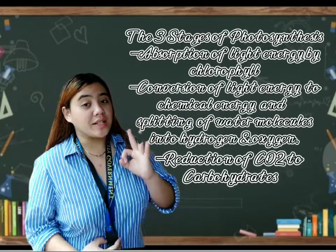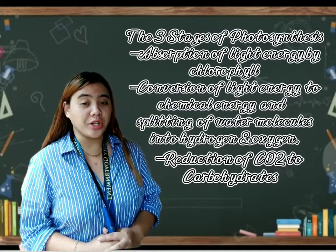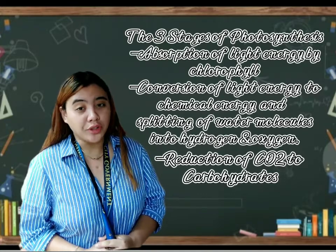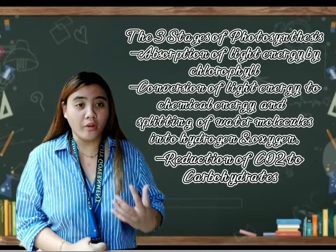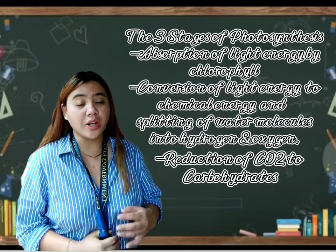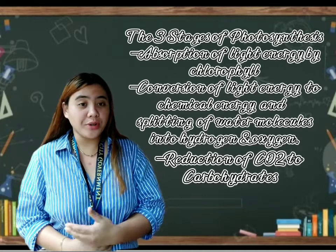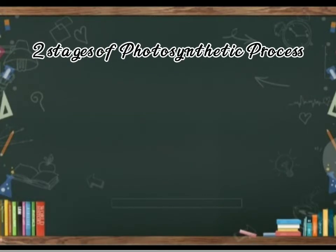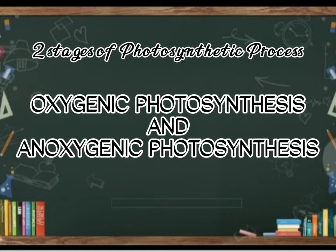And by the way, class, there are three stages of photosynthesis. First, absorption of light energy by chlorophyll. Second, conversion of light energy to chemical energy and splitting water molecules into hydrogen and oxygen. Lastly, reduction of carbon dioxide to carbohydrates. And there are also two stages of photosynthetic processes: oxygenic photosynthesis and anoxygenic photosynthesis.